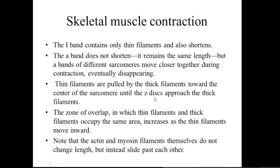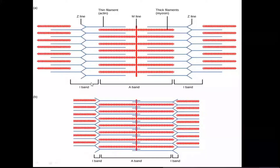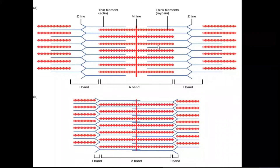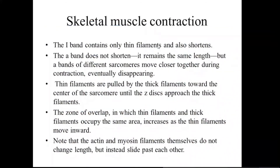As seen in the diagram, when the Z-line contracts, thick and thin filaments overlap one another, causing the muscle to contract. The H-line disappears due to contraction of the sarcomere structure, and the I-band also gets shorter. The zone of overlap — where thin and thick filaments occupy the same area — increases as the thin filaments move inward.